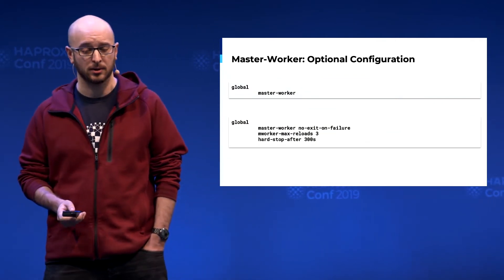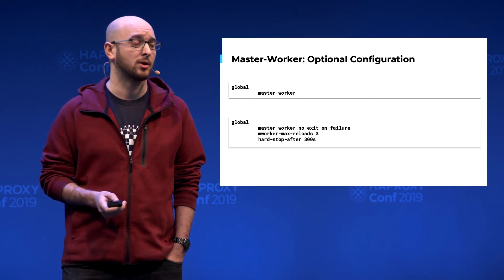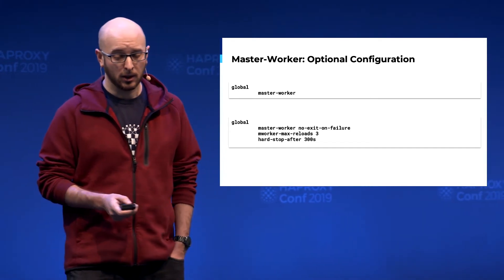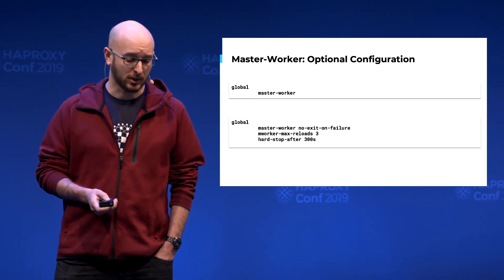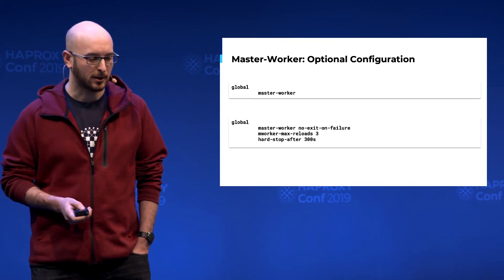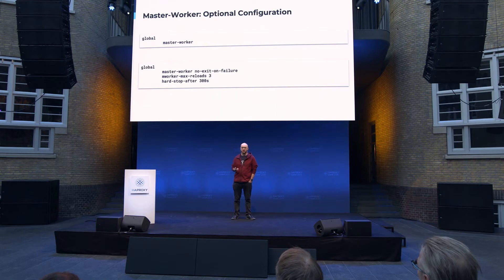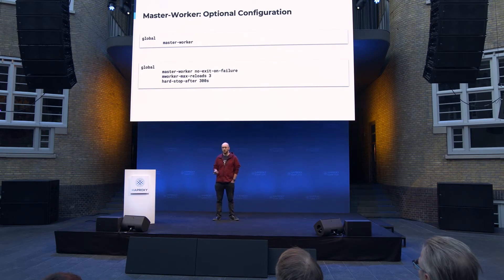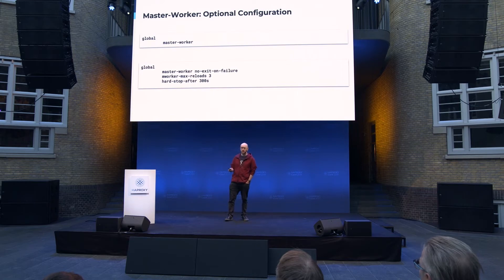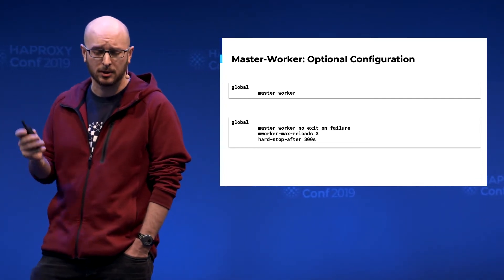There is some optional configuration. For example, if you don't want to use the dash-w argument, you can use the master-worker keyword in the global section. There is the no-exit-on-failure keyword, which is the opposite of the exit-on-failure behavior of the master-worker. In fact, if there is a problem with one of the workers — for example, if it quits for whatever reason — the master will kill every other worker and leave. So it guarantees you a complete HAProxy instance which is working. If you want to debug and have one worker remain even if another segfaults or has an out-of-memory error, you can use this keyword.